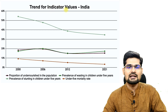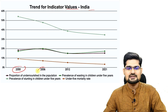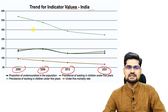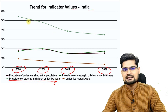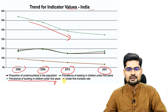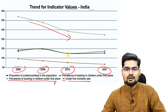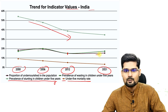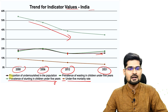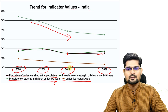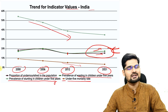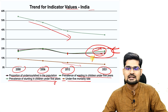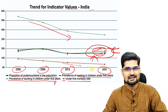Looking at the trend for indicator values for India across 2006, 2012, and 2021: the prevalence of stunting in children under five years has significantly gone down. The under-five mortality rate had gone down but has now started to pick up gradually — that is where the worry is. The proportion of undernourished children in the population has gone down, but the prevalence of wasting in children under five years is again going up. These are the areas we need to work on in the Indian context.